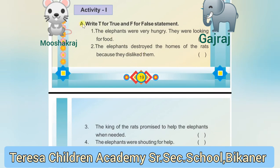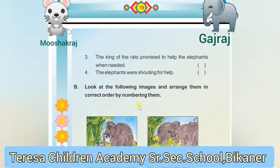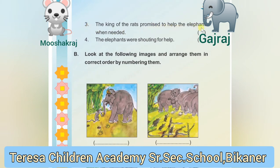Let's do Activity One, Exercise A: Write T for true and F for false. Statement one: The elephants were very hungry and looking for food — this is false. Statement two: The elephants destroyed the homes of the rats because they disliked them — this is also false. Both are false statements. Statement three: The king of the rats promised to help the elephants when needed — this is true. Statement four: The elephants were shouting for help — true. Both three and four are true.